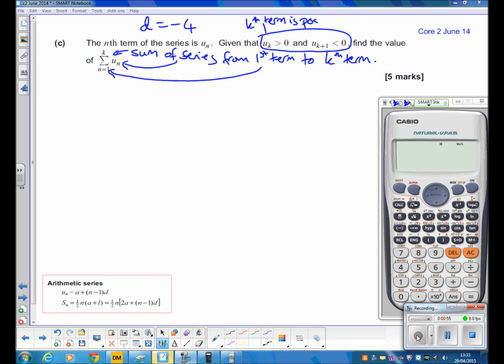Greater than 0 means it's positive. The k+1 term, so the next term, is less than 0, so it's negative. So basically they're saying add up all the terms of the sequence that are positive, and once you start getting to negative numbers, stop adding them up.